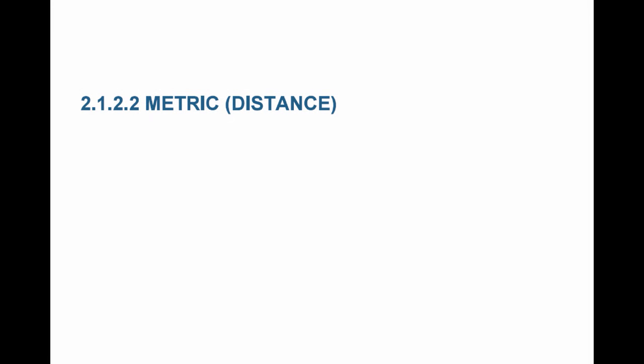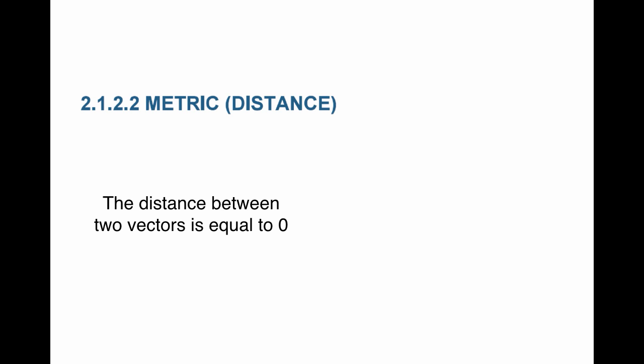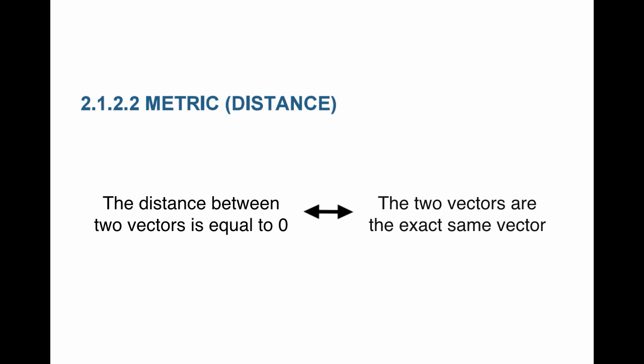The second measure I want in linear vector spaces is a distance or a metric between vectors. This distance must also satisfy three properties. One of the most important properties is that the distance between two vectors equals zero if and only if those two vectors are exactly the same vector.